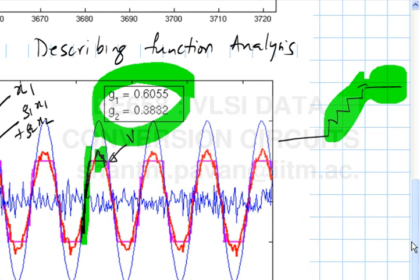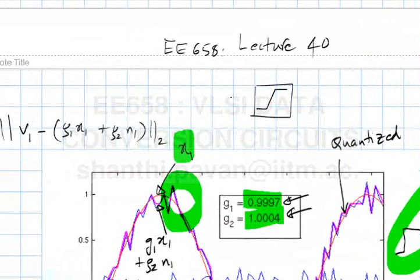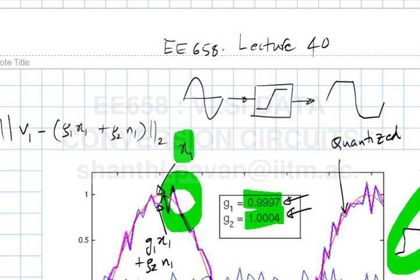The gain from one input to the output depends on the other input as well, and not surprisingly, it also depends on the specific waveshape. Many people have computed the describing function for given nonlinearity shapes and input types as a function of amplitude. For example, if you had a clipping nonlinearity and the input was a sine wave, the output will be a clipped sine wave. The linear approximation is simply a constant gain — the ratio of the fundamental amplitude to the input amplitude.